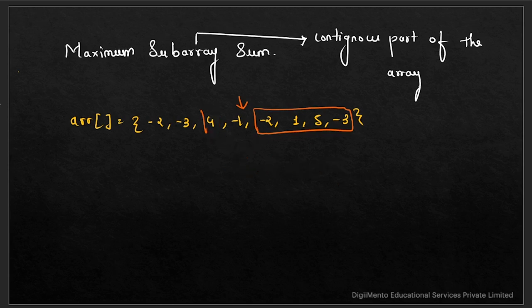Now we're clear on what a subarray is. The problem asks for the maximum subarray sum — we need to find the contiguous subarray that gives us the maximum possible sum.